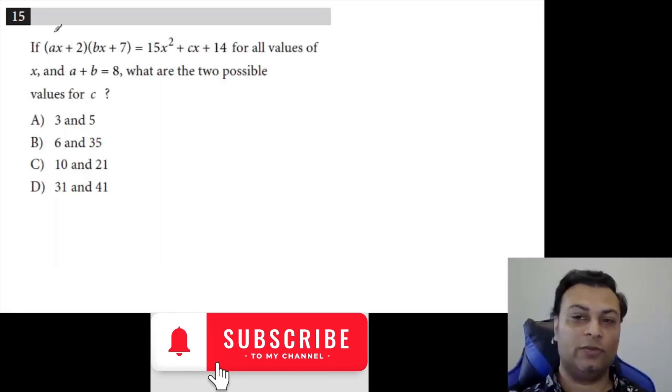Okay, what we'll do is we'll expand this term by term. So you get AX times BX, which is ABX squared, plus 7AX, plus 2BX, plus 14.